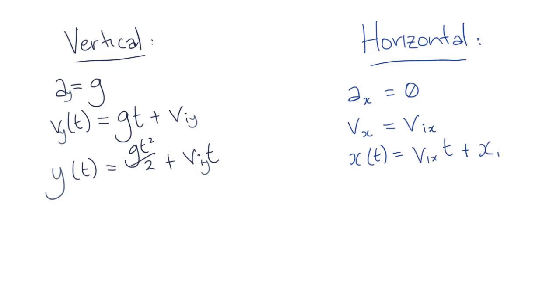So our horizontal displacement is just equal to our initial velocity times time, plus any initial horizontal displacement. As previously, if we're finding displacement from an initial position of zero, then this term will be zero, and our horizontal displacement will just be equal to the initial horizontal velocity times time.